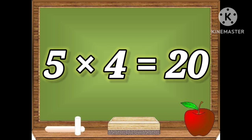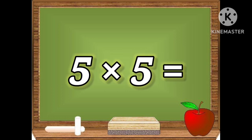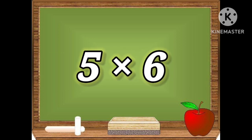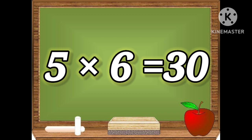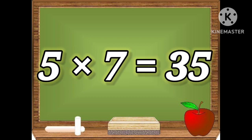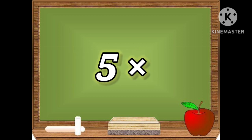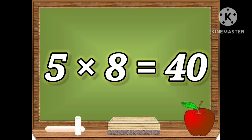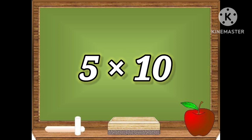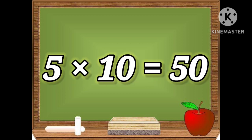Five fours are twenty. Five fives are twenty-five. Five sixes are thirty. Five sevens are thirty-five. Five eights are forty. Five nines are forty-five. Five tens are fifty.